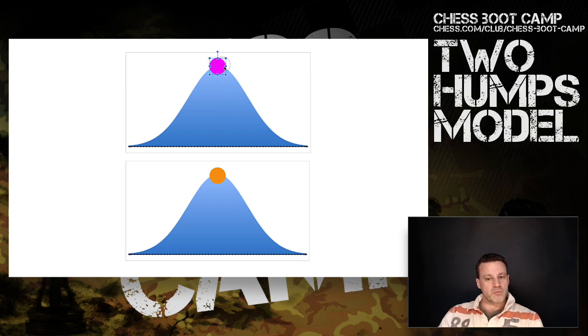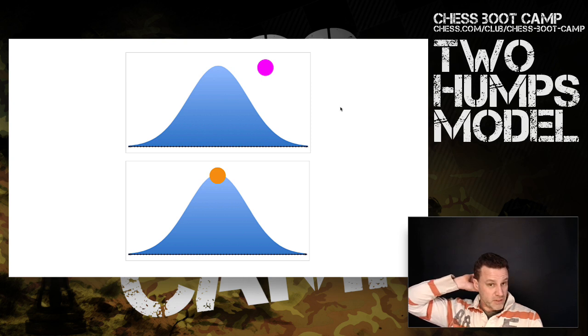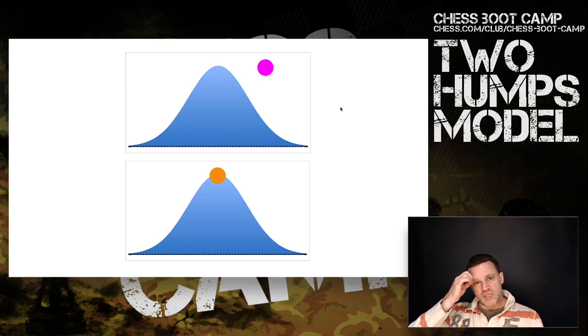The pink dot is you and the orange dot is your opponent. These humps represent bell curves, also known as normal distribution. Normal distribution is found in lots and lots of places in nature where there is a tendency towards the average - people's shoe sizes, IQ, height, that kind of thing.